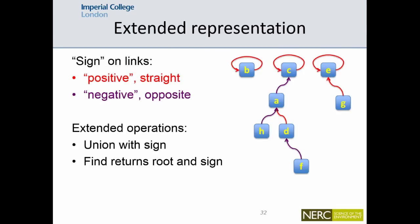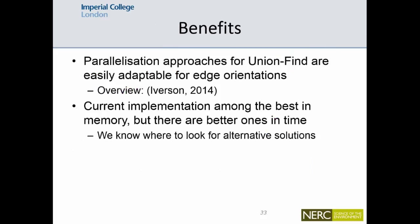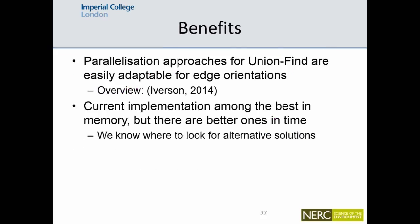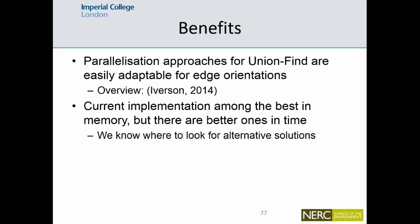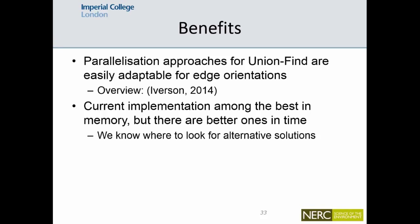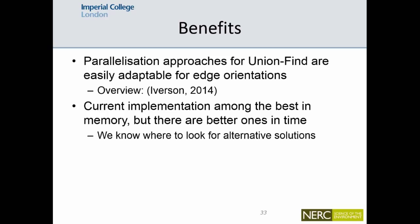And also when we do the union, one doesn't just call the union with two sets they want to merge, but also with the sign, so that when I assign, let's say that B and C will be in the same set, whether should I use a positive or a negative link. And using this representation, we can basically adopt existing parallelization work for the disjoint set data structure or the union-find problem to create new parallel algorithms to orient quadrilateral edges of quadrilateral meshes.